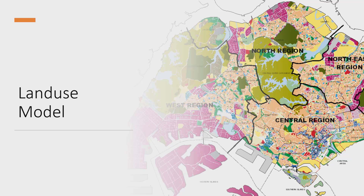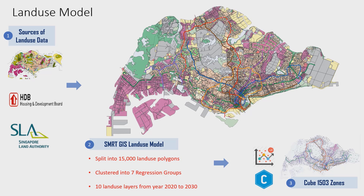I would like to touch on the land use model. To support the trip generation model, we had a land use database stored in a separate GIS system. This is a screenshot of the SMRT land use model in GIS. We split the entire Singapore island into 15,000 land use polygons. Trip generation is supported by seven regression groups to estimate trip ends for the 1,503 zones in CUBE. For each polygon, we have attributes on the land use type, expected completion date, population, plot ratio, and gross floor area. Data for all the land use models are obtained from different sources, mainly from government agencies. We check and update the model every quarter.